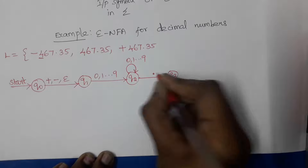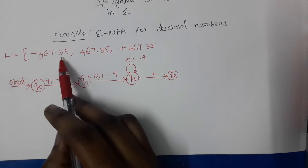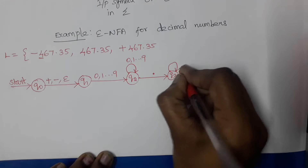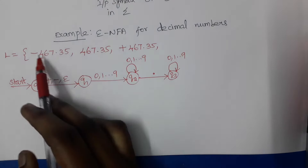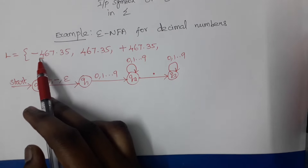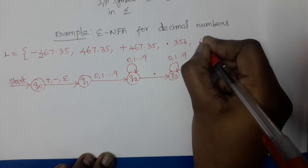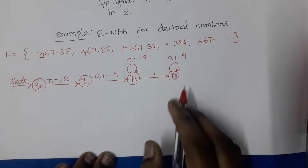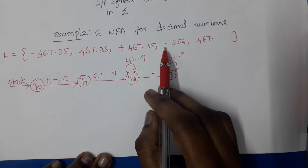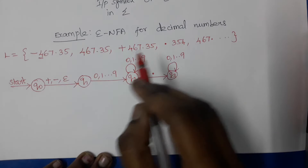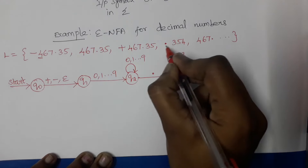Then for the decimal point, it changes state from q2 to q3. After the dot, it reads a sequence of digits again, represented by zero to nine. One rule is that either the first string of digits or the second string of digits — digits before the decimal point or digits after the decimal point — may be optional. For example, .354 or 467. are also valid decimal numbers. If the first string of digits is optional, after following an epsilon transition we will be in state q1 and it starts reading the dot.